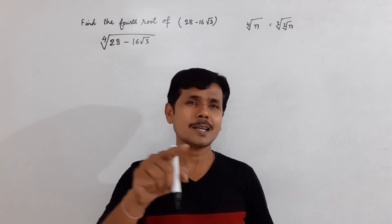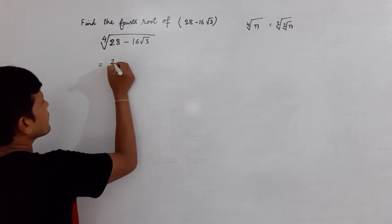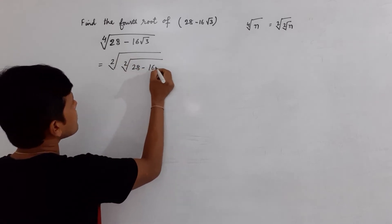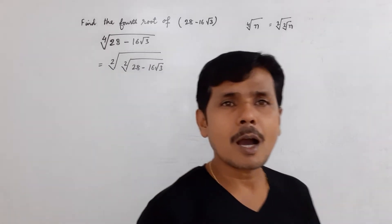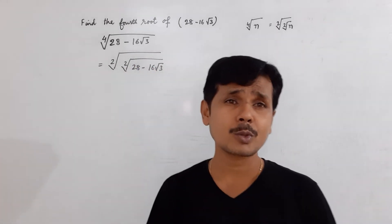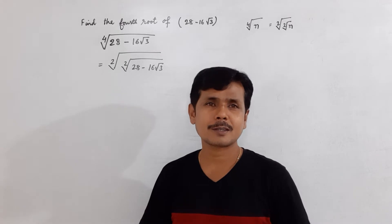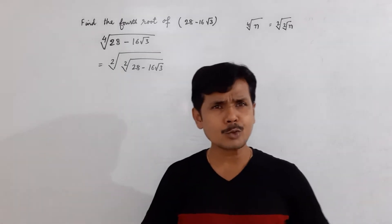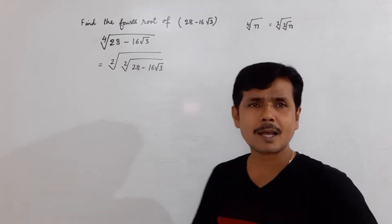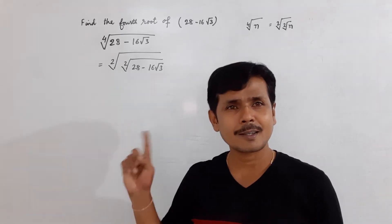I'm going to use the same ideology here. I'm writing it as square root of square root of 28 minus 16 root 3. Our first job is to find the square root of 28 minus 16 root 3. We have an irrational number here and we need to find its square root — that means we can convert this number as a perfect square of some irrational number.